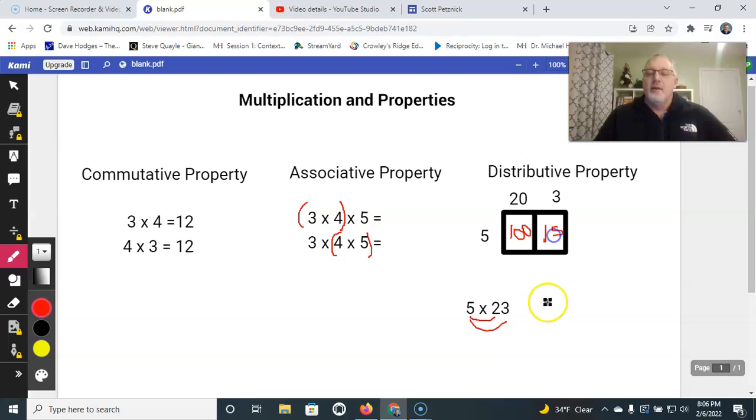And then I add them together, and I get 115. That's my final answer. So again, distributive property, as I break it apart, I do something to the parts and then add it back together.